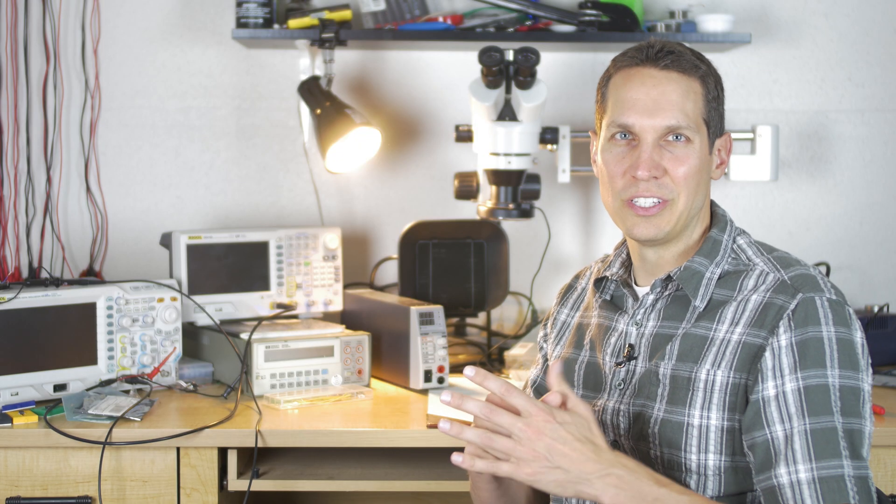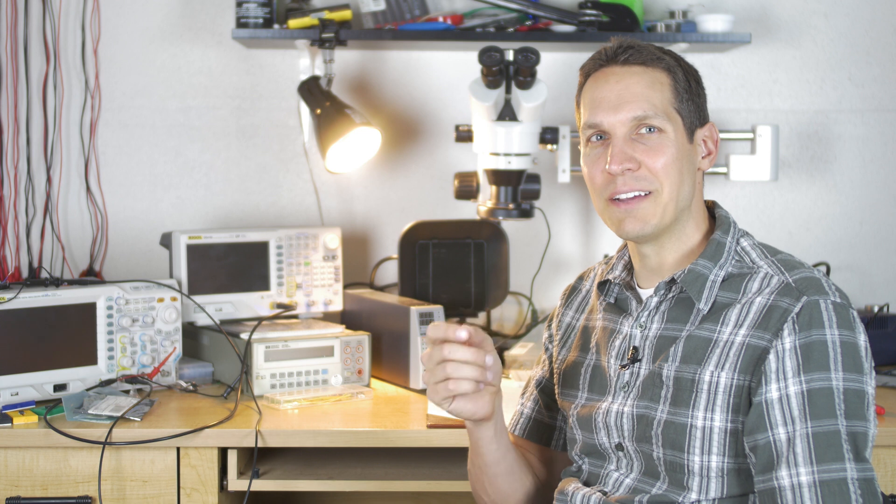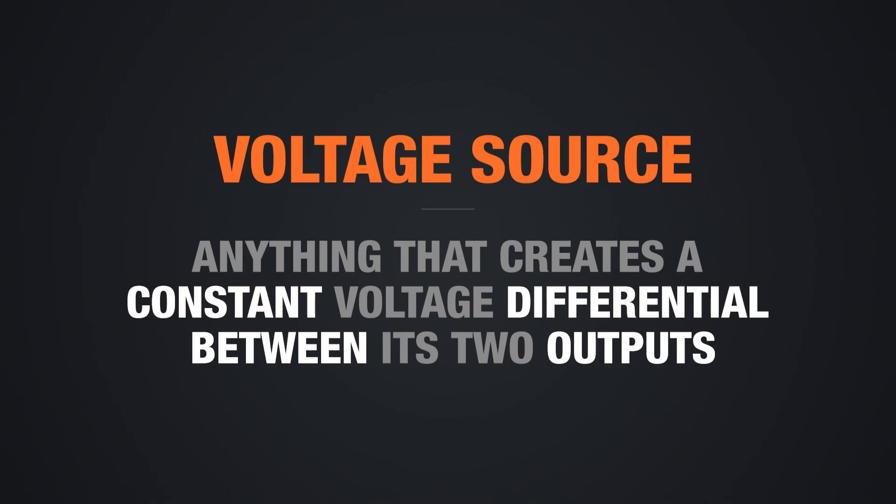When you first start learning about electronics, you hear about voltage and current sources, as well as seeing their symbols and schematics. They will be used in nearly every circuit you come across, so it's good to have a fundamental understanding of what they do and their limitations.